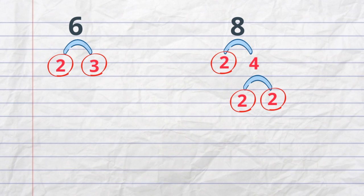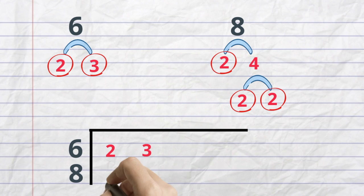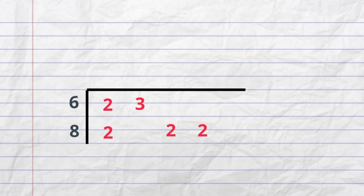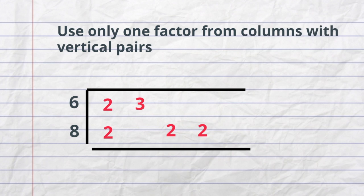So now we have all the prime numbers. The next thing we need to do is create a prime factorization chart. I will write the prime numbers for 6, which is 2 and 3, and then the prime numbers for 8. I will skip a space where the 3 is because I do not have a 3, so I will write 2, skip a space, 2 and 2. Use only one factor from a column if you have a vertical pair. Column 1, we have a vertical pair of 2's, so I will bring the 2 down. Next for 3, I do not have a vertical pair. The other 2's also have no vertical pair. So my greatest common factor of 6 and 8 is 2.